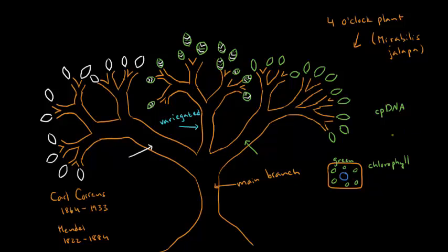Chlorophyll is what makes the leaf green. More specifically, chlorophyll absorbs all of the colors in sunlight except for green, so green is reflected. The point is that chlorophyll makes the leaf green.